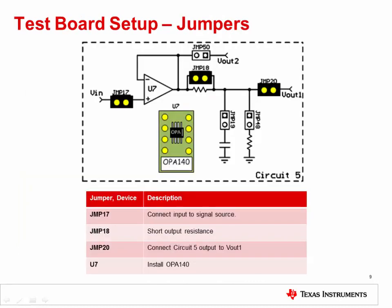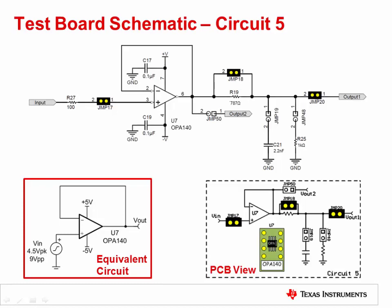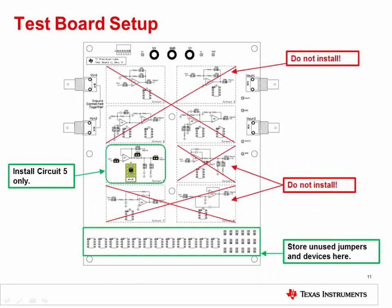To prepare the test board for the measurement, install the jumpers and devices on circuit 5 as shown here. Install JMP17, JMP18, and JMP20, as well as the OPA140 in socket U7. This slide shows the full schematic for circuit 5 on the TI Precision Labs test board. You will use this circuit to measure the effect of input and output voltage range limitations on the OPA140. For the test board to function properly, it is important that you only install jumpers and devices in circuit 5. Remove any jumpers or devices from the unused circuits and store them in the storage area at the bottom of the test board.